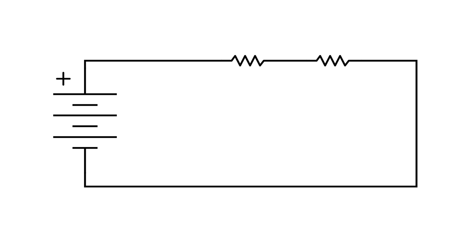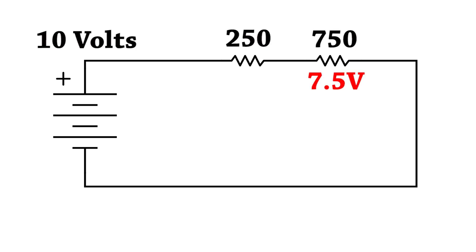Now, it's interesting to note that this would also work with a 25 ohm resistor and a 75 ohm resistor. We'd still end up with the same 7.5 volts across the 75 ohm resistor, but the whole circuit current would be 10 times higher.